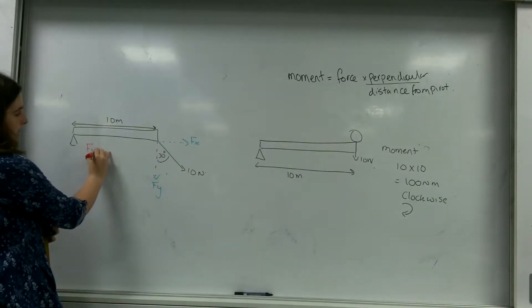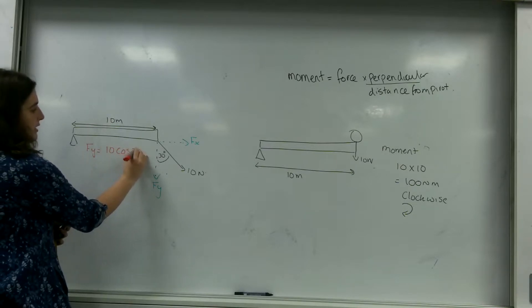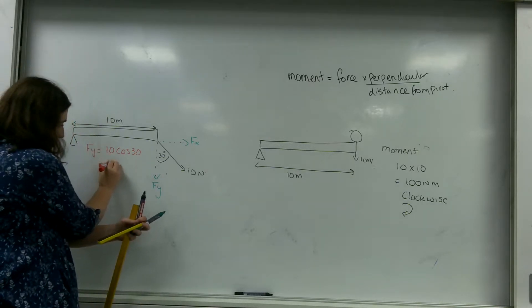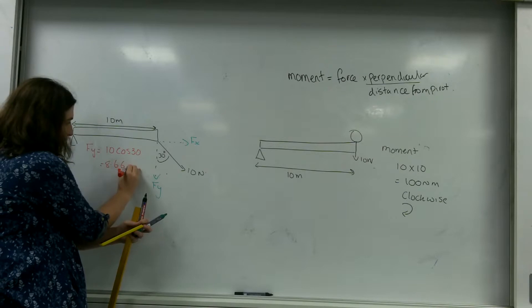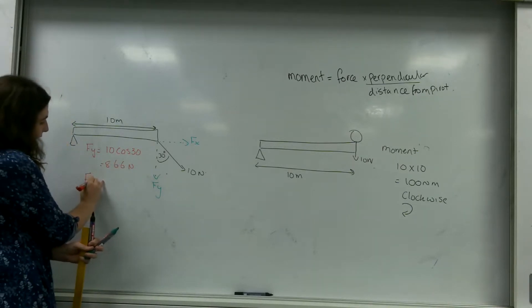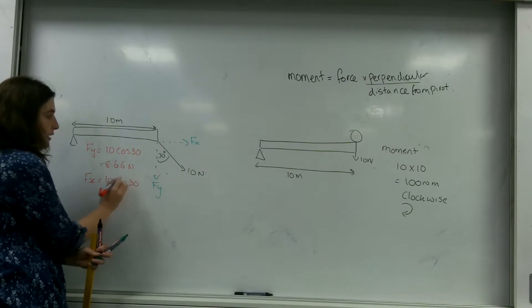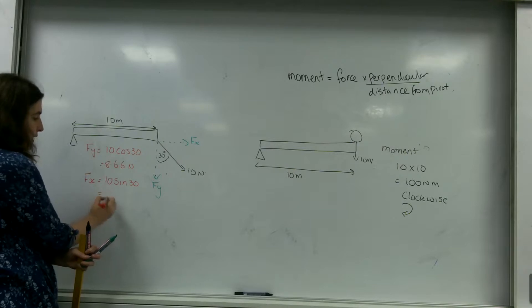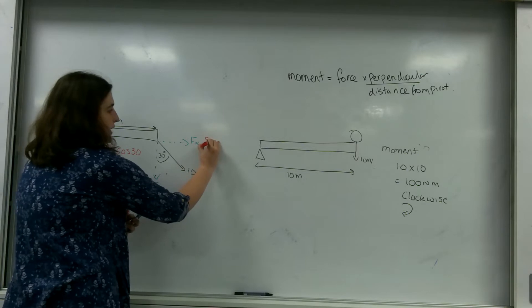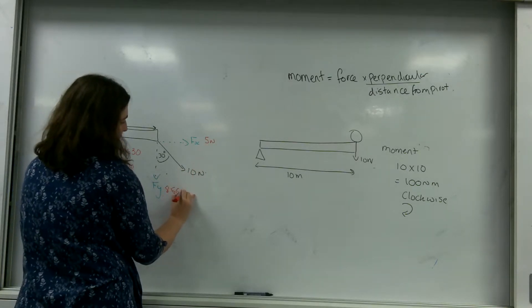So f_y is 10 cos 30, which equals 8.66 newtons. And f_x equals 10 sin 30, which equals 5 newtons. So this here is 5 newtons, and this here is 8.66 newtons.